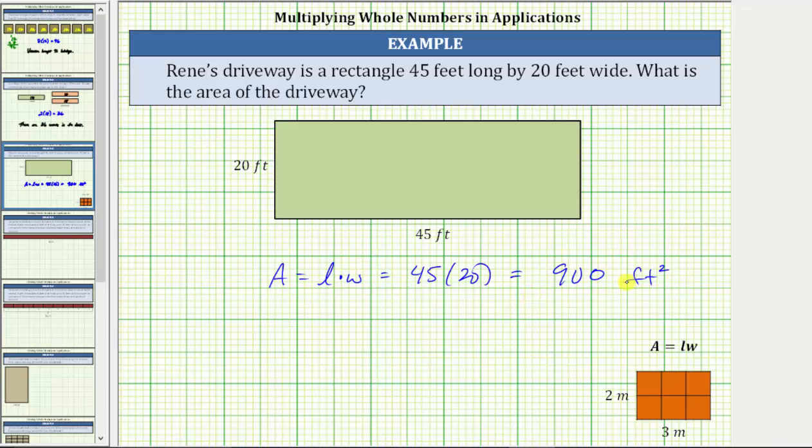45 times 20 is equal to 900. The area of the driveway is 900 square feet. Let's also find this product by hand. We have 45 times 20. Because we are multiplying by a multiple of 10, we will have a zero in the ones place value. And now we multiply by two. Two times five is 10. Record the zero. Perform an exchange with the one. Two times four is eight plus one is nine, giving us a product of 900. Verifying René's driveway has an area of 900 square feet.